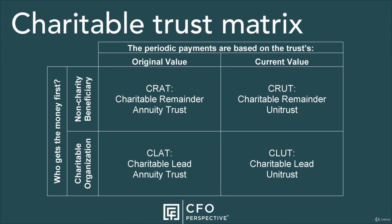Charitable Remainder Annuity Trust, or CRAT for short. In a CRAT, the non-charity beneficiary gets periodic payments either for their life or for a fixed period of time. Once they die or the time period expires, whatever is left in the trust goes to the charities. The annual total of the payments must be equal to or more than 5%, but less than 50% of the initial value of the trust.